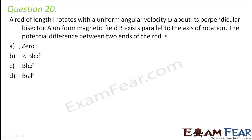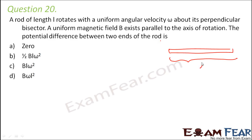Question number 20: A rod of length l rotates with a uniform angular velocity ω about its perpendicular bisector. A uniform magnetic field B exists parallel to the axis of rotation. Find the potential difference between the two ends of the rod. Let's say we have a rod of length l, and we consider a small element dx at a distance x from the center of the rod.